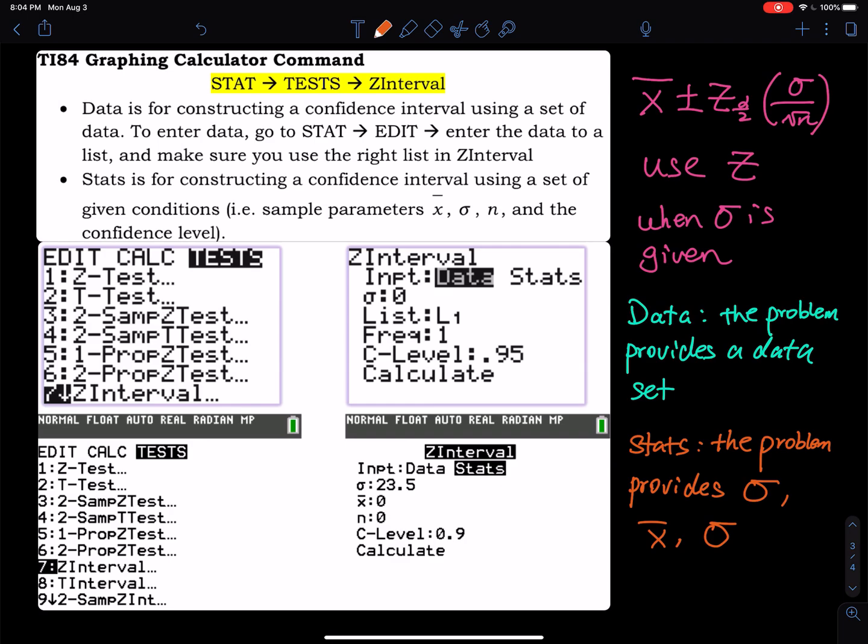Do you see the formula on the right? I call this a z procedure because of the letter z. You use the z procedure when the population standard deviation sigma is given. If you don't know sigma, then you have to use a t procedure, which will be another lesson.